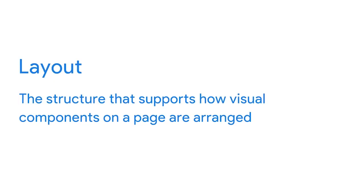A wireframe is an outline or sketch of a product or screen. Wireframes are relatively bare bones, consisting primarily of shapes, lines, and minimal text. Wireframes help the designer figure out the layout of the page. A layout is the structure that supports how visual components on a page are arranged, demonstrating where each feature fits and how users will progress from one screen to the next.